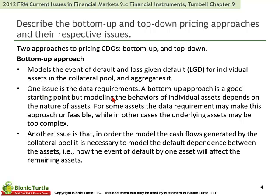One of the issues with the bottom-up approach is the data requirements. It is a good starting point, but modeling the behaviors of individual assets depends on the nature of the assets. For some assets, the data requirement may make this approach unfeasible, while in other cases the underlying assets may be too complex. Another issue is that in order to model the cash flows generated by the collateral pool, it is necessary to model the default dependence between the assets — how the event of default by one asset will affect the remaining assets. This modeling of default dependence becomes a critical variable and is notoriously difficult to parameterize.